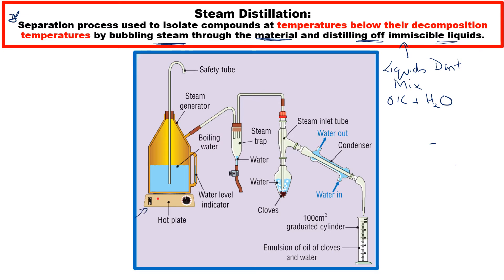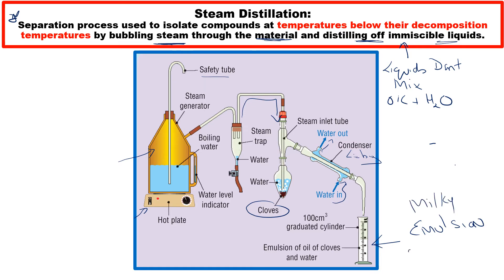The apparatus diagram includes a hot plate and a steam generator. Coming out from the steam generator is a safety tube to allow gas to escape. Steam is passed through a steam trap — which prevents the flask from filling with water — then into a round-bottom flask containing whole cloves. A Liebig condenser is set up with water entering at the bottom and exiting at the top, and the milky emulsion of clove oil and water is collected into a small graduated cylinder.